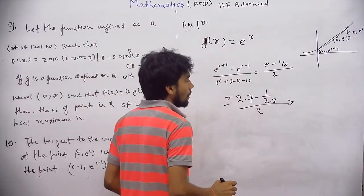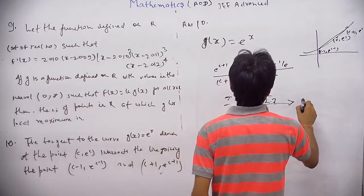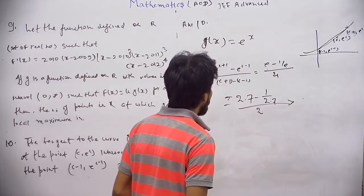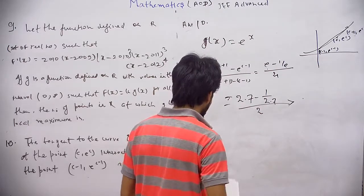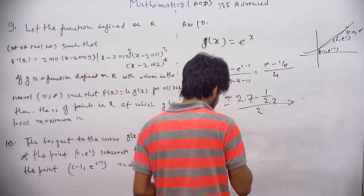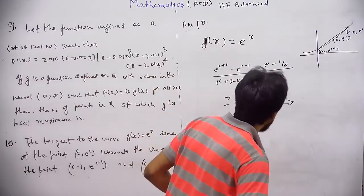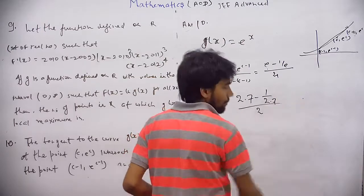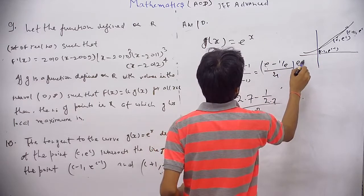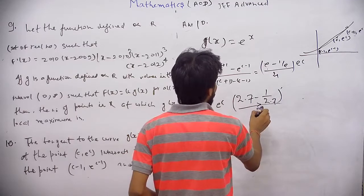So 2.7 minus 1 by 2.7 divided by 2. It will be greater than... So the value of this will be greater than 1.